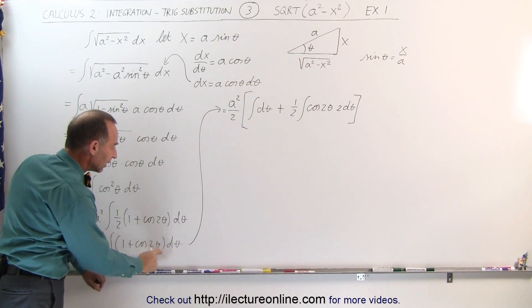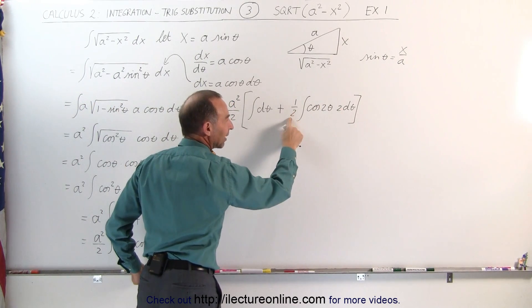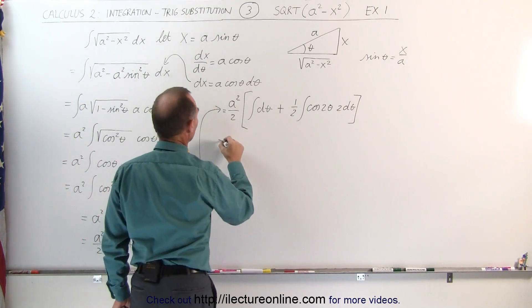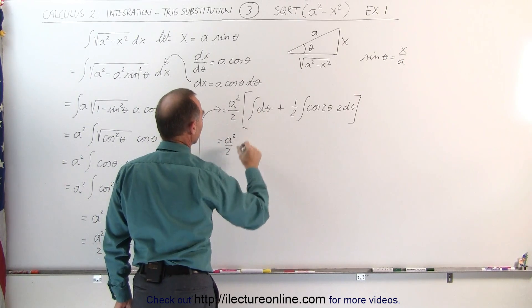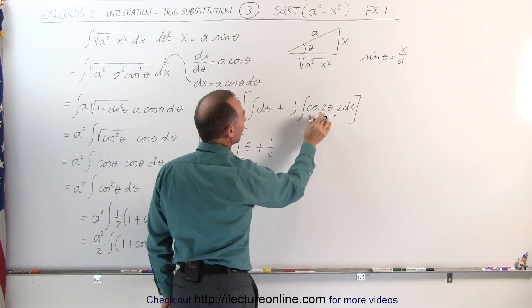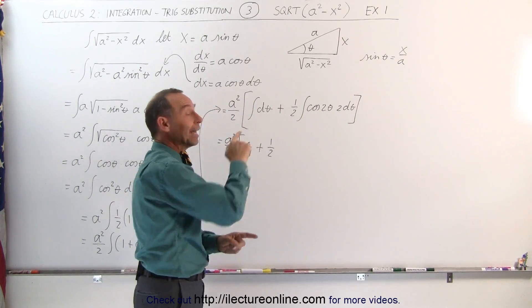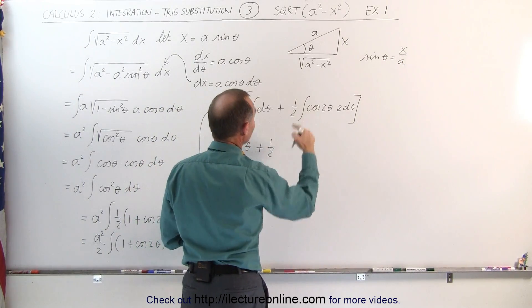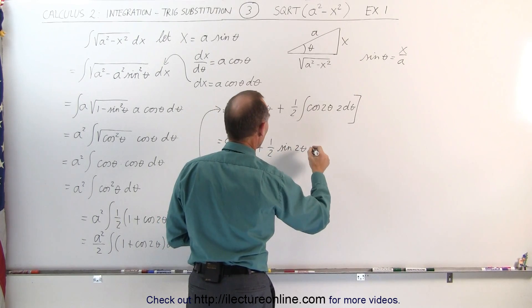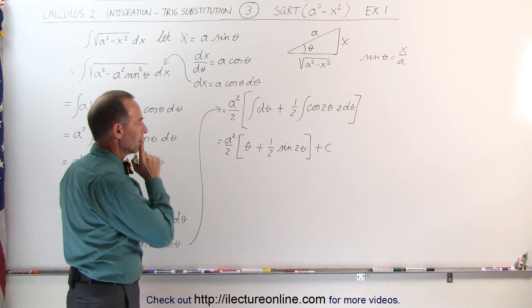Notice that at cosine(2θ) dθ we need a 2 dθ in order to integrate it, but multiplying by 2 and dividing by 2 doesn't change the integral. Now integrating: the integral of dθ is simply theta, plus 1/2 times the integral of cosine(2θ) — the integral of cosine is sine — giving sine(2θ). The 2 dθ drops out, and of course we can't forget the constant of integration.